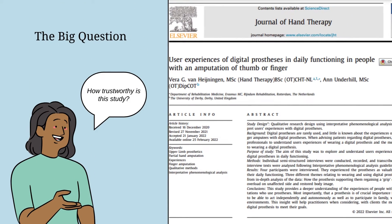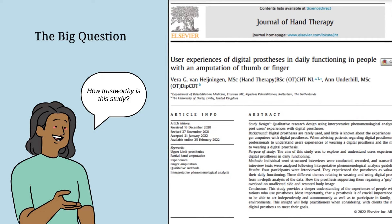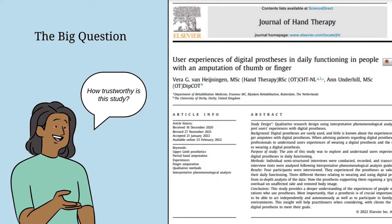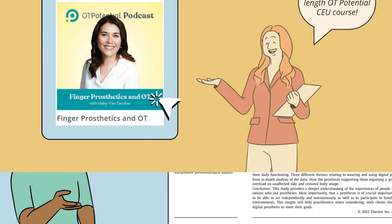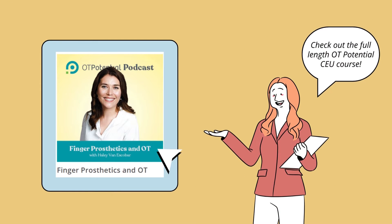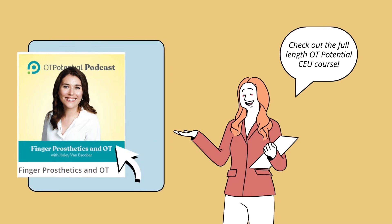The article we'll be looking at is titled 'User Experiences of Digital Prostheses in Daily Functioning in People with an Amputation of Thumb or Finger,' brought to us by the Journal of Hand Therapy. There is an entire OT Potential course on this article if you'd like more context. But for now, let's jump into the models.